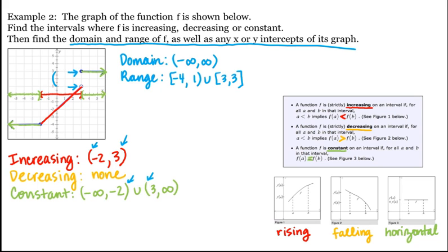We see that we have both an x-intercept and a y-intercept. The x-intercept is 2, and the y-intercept is negative 2. This is how we work with the terms increasing, decreasing, and constant, as well as domain, range, and intercepts.